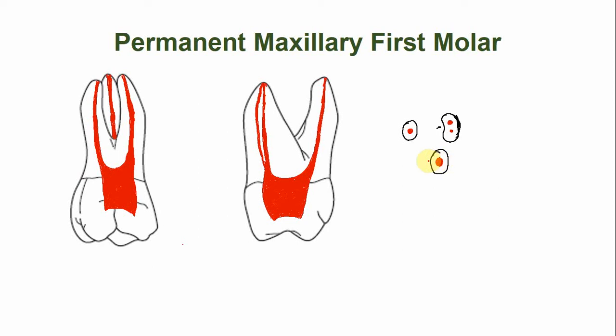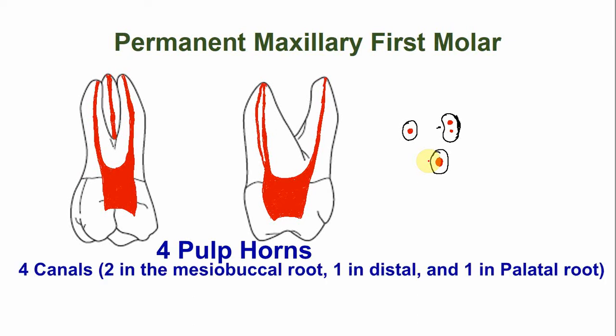In summary, the permanent maxillary first molar has four pulp points that correspond to the number of cusps. The tooth has four canals: two in the mesial buccal root, one in the distal root, and one in the palatal root. It is not uncommon for the MB2 canal to be missing, in which case the permanent maxillary first molar has three canals.